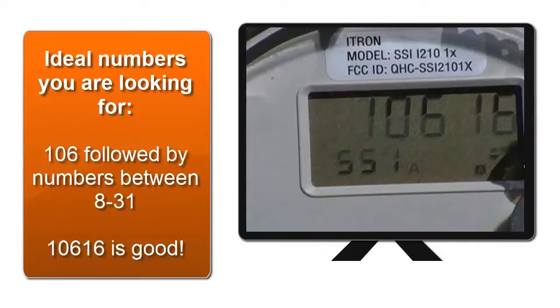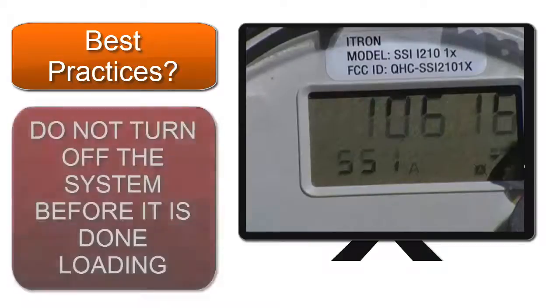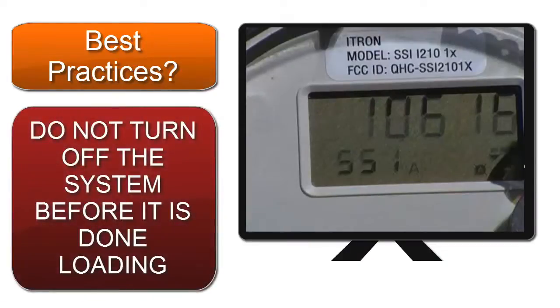Make sure to download the iTron install guide from Sunnova Articles and locate the table on the last page. This table will show you the breakdown of the sequence of what the numbers mean. We recommend waiting up to 5 to 10 minutes before leaving the site. Do not turn off the system before it is done loading.